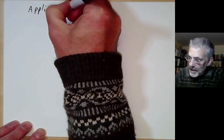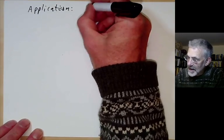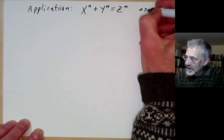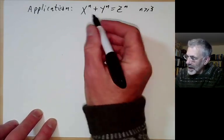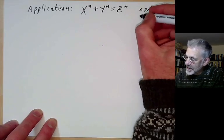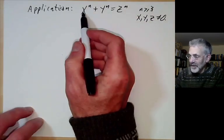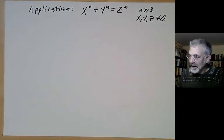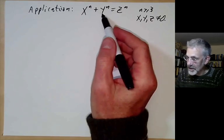Now I'll give an application of the fourth method to Fermat's Last Theorem. Fermat's Last Theorem states that x to the n plus y to the n equals z to the n has no non-trivial solutions provided n is greater than or equal to 3. We've been doing the case n equals 2, which has infinitely many solutions. This was finally proved by Wiles about 20 or 30 years ago.